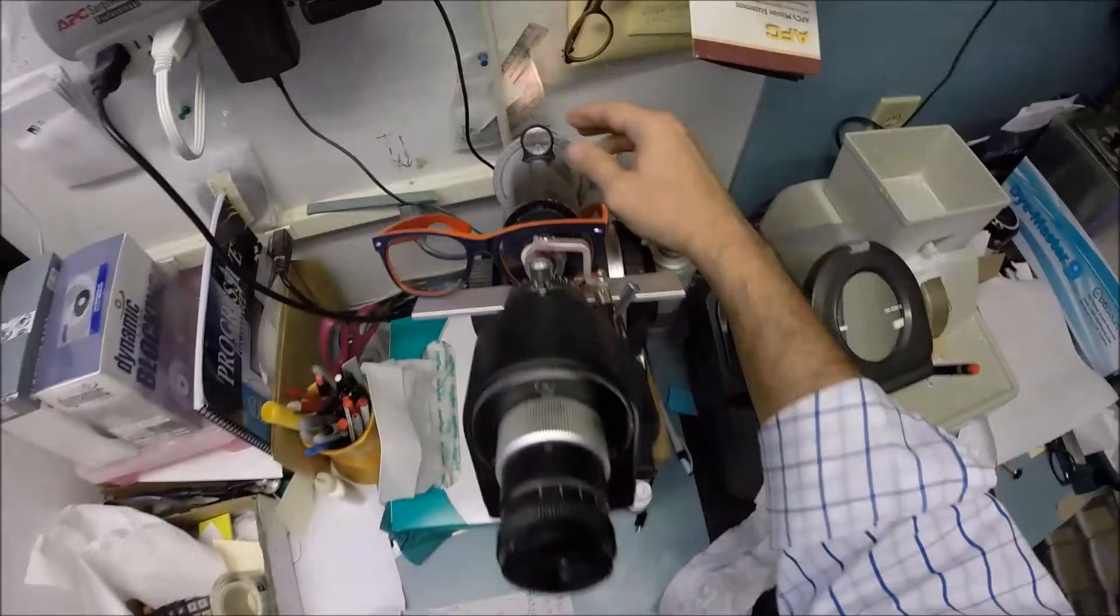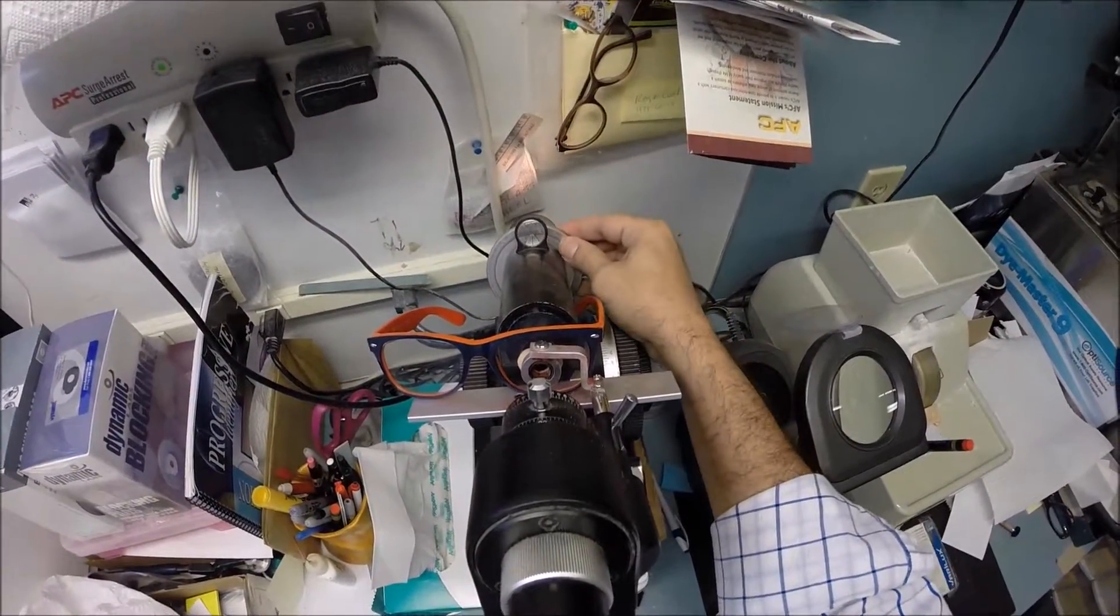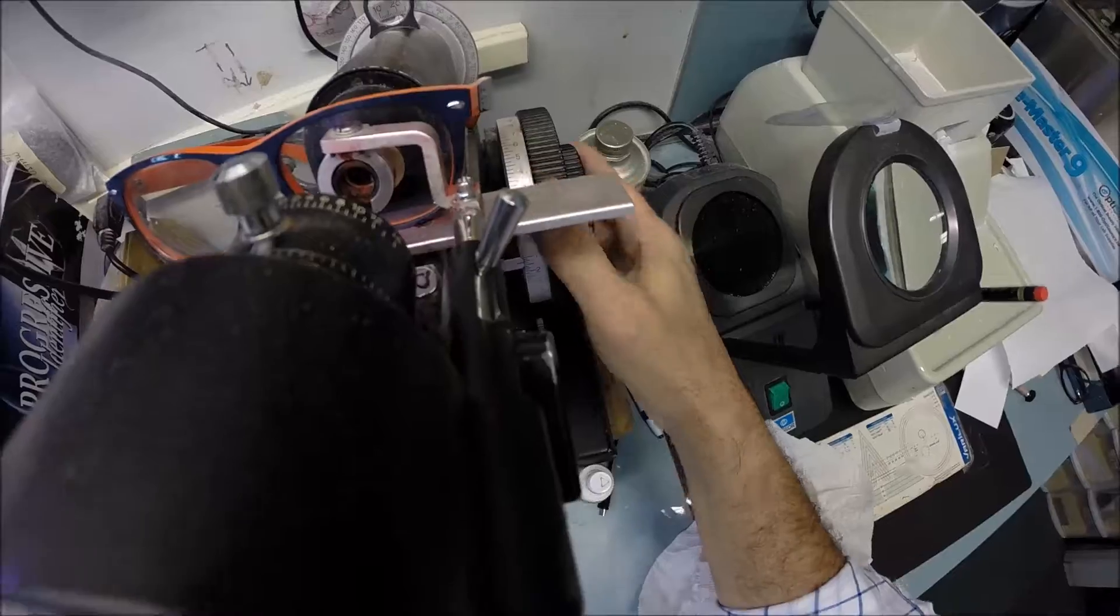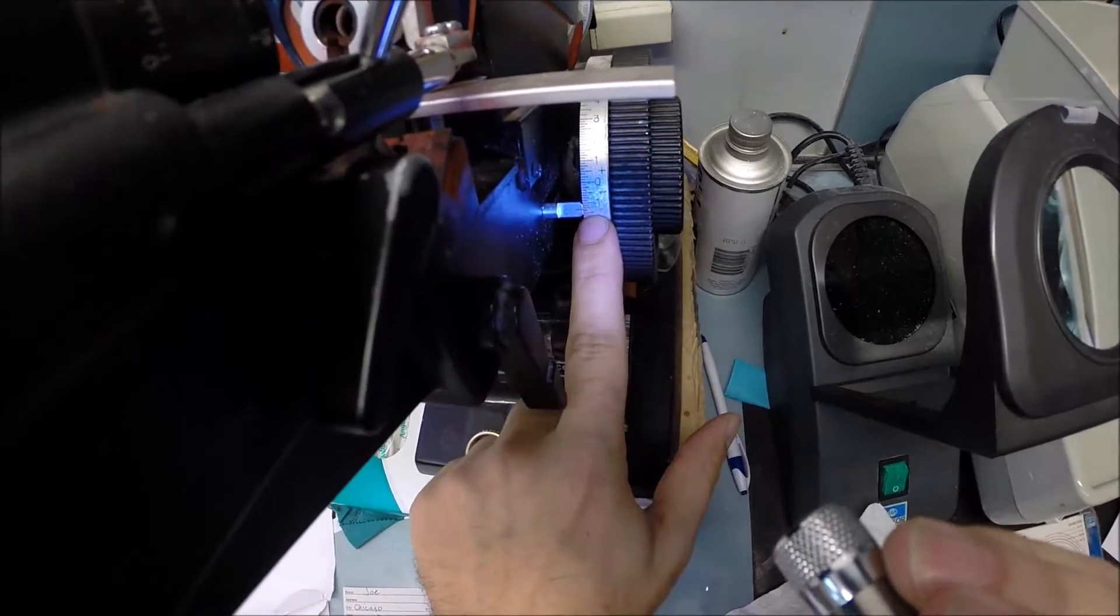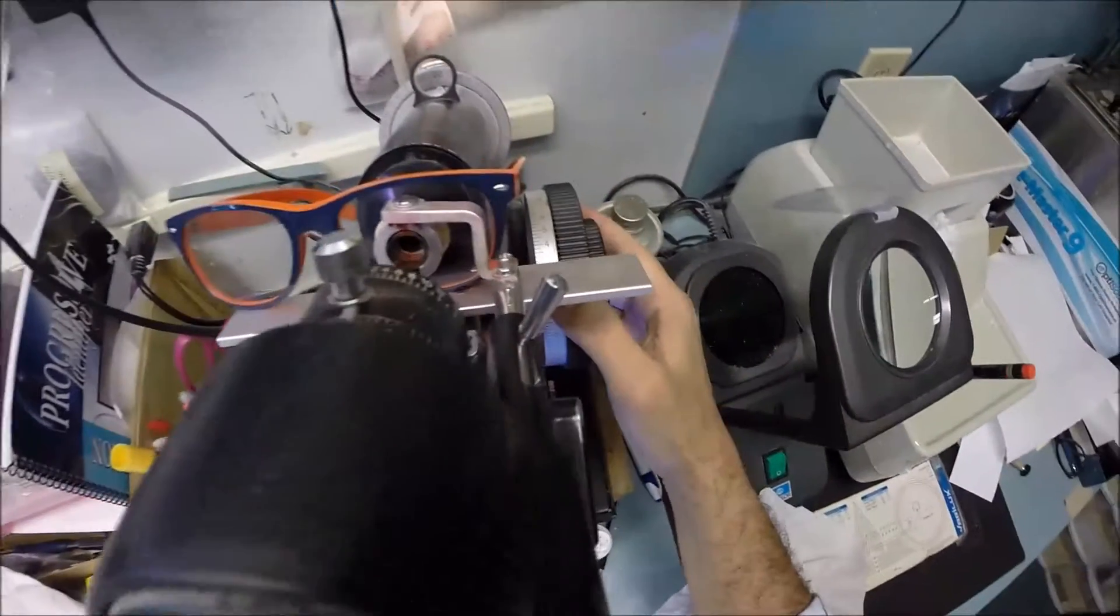I'm going to measure right where that red dot is, the optical center. That is your pupillary distance for your left eye. I'm going to spin the axis wheel back to 20 and measure.